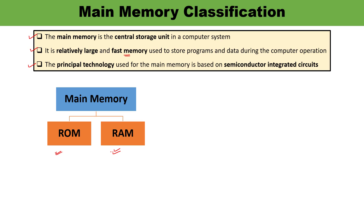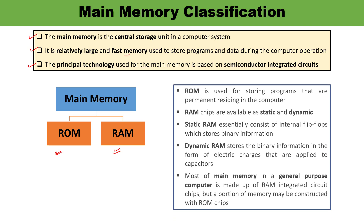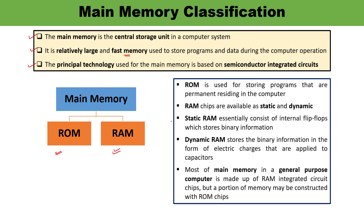Static RAM essentially consists of flip-flops which store binary information — one flip-flop stores one bit of information. So static RAM is made up of flip-flops. Dynamic RAM stores binary information in the form of electric charges applied to capacitors. Most main memory in general-purpose computers is made up of RAM integrated chips.